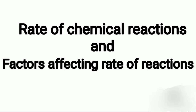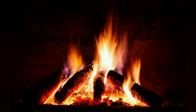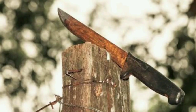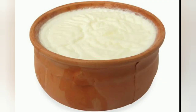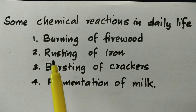This is the rate of chemical reactions and factors affecting the rate of reactions. The rate of chemical reactions refers to the reaction speed. Examples include the burning of firewood, the rusting of iron, and the fermentation of milk. These reactions can be fast or slow.